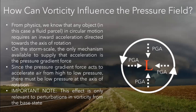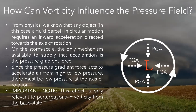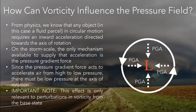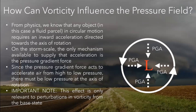So the result: anytime you have vorticity, you're going to have low pressure. An important note is that this is only relevant to perturbations in vorticity from the base state. You can have large vorticity everywhere, but you're still not going to have low pressure. It's really the local maximums in vorticity that influence the pressure field. And one more note — this is completely agnostic to the sense of rotation. So both cyclonic and anticyclonic vorticity will give you low pressure of equal magnitude. That'll come into play a little later.